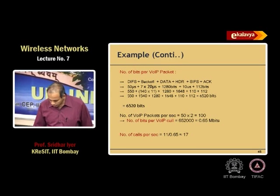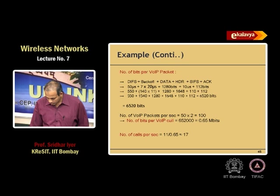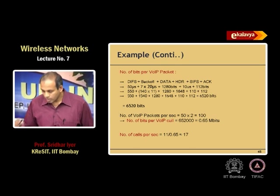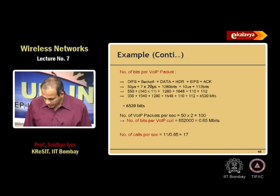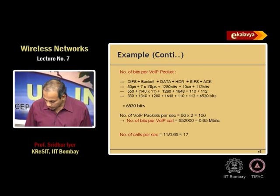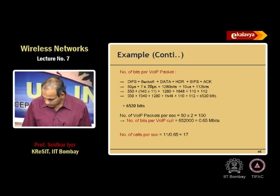So let us go step-wise. First you want to see the number of bits per VoIP packet. We want to find out the total number of bits that go for each VoIP packet. That will be DIFS plus backoff, because you are always going to have packets in the queue — so you cannot assume there is no backoff. The access point is always going to have to do some backoff. So: DIFS plus backoff plus data plus SIFS plus ACK.